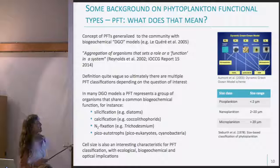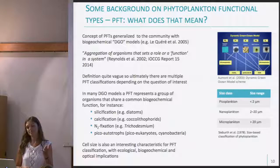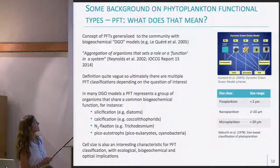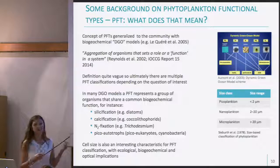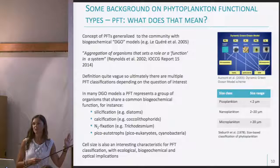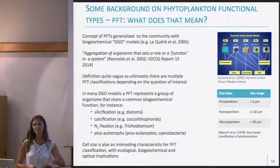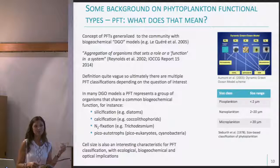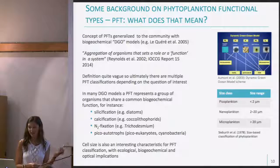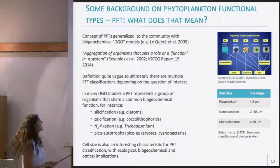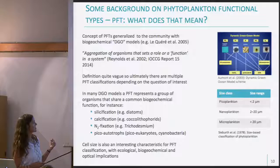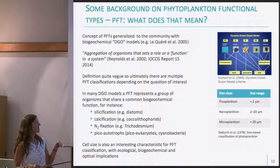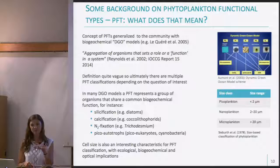Many biogeochemical models have PFT classifications such as silicifiers, calcifiers, nitrogen fixers, and picophytoplankton. You can see that the classification is heterogeneous — some groups interact with specific biogeochemical elements and one is based on size. In summary, there's no clear definition of PFT. Another interesting PFT classification is based on size, which has many ecological, biogeochemical, and optical implications. Many algorithms in the literature produce PFT products in terms of size classes.